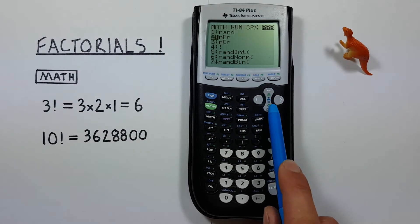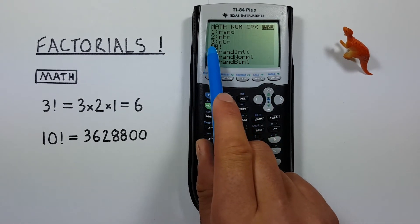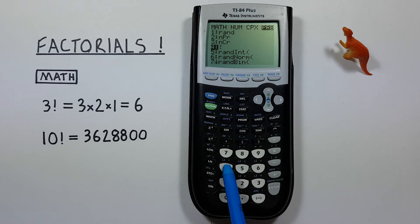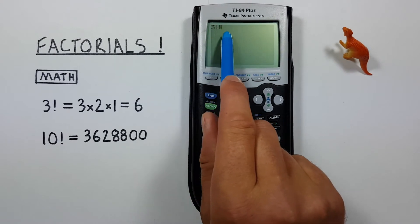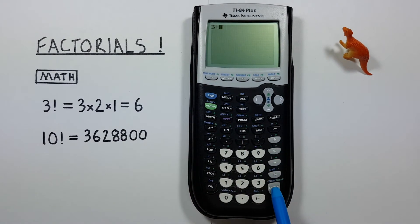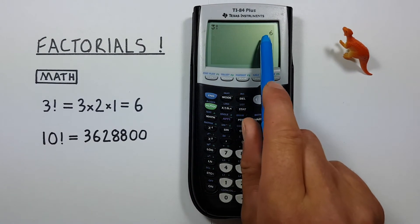We can either scroll down to it or just press 4 to select it. There we go. We see 3 factorial on our screen and if we press enter we get a result of 6.